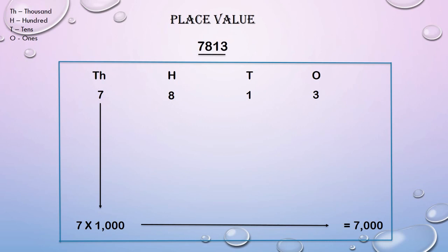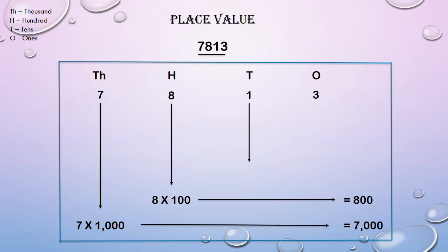8 is in the 100's column, which means there are 8 hundreds, so its place value is 8 into 100, that is 800. 1 is in the 10's column, which means there is 1 ten, so its place value is 1 into 10, that is 10. 3 is in the 1's column, which means there are 3 ones, so its place value is 3 into 1, that is 3.